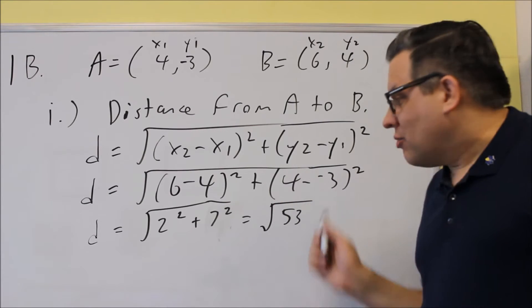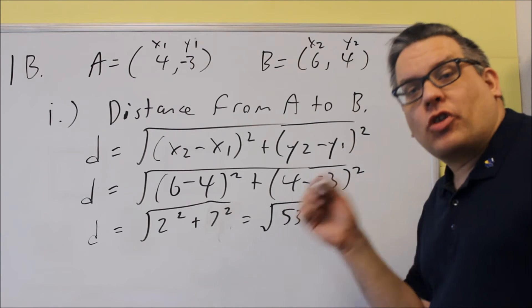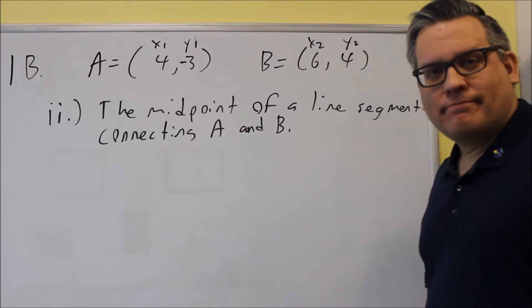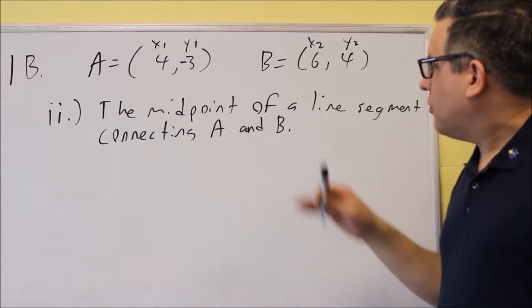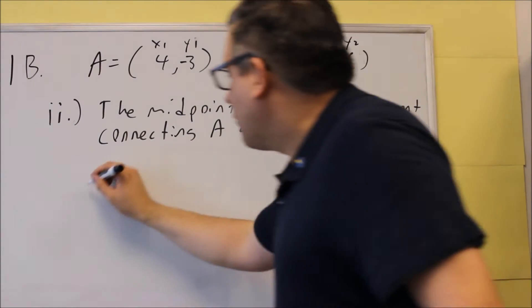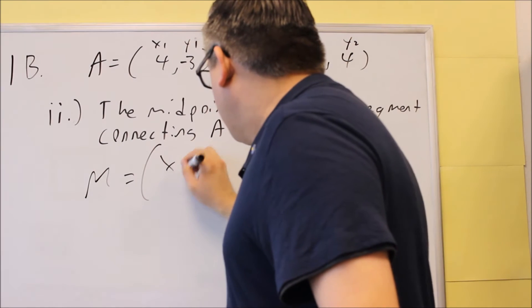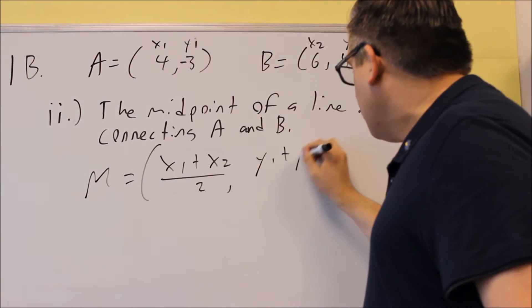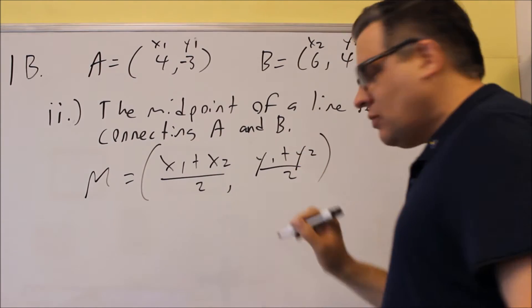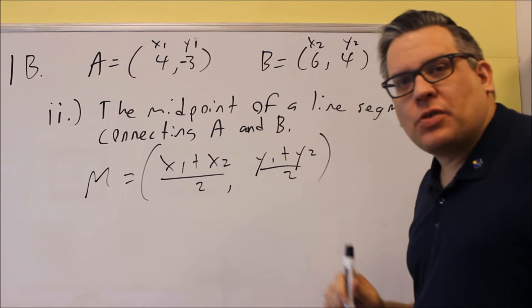If you do have a square root as your answer, you do want to leave it in a square root form. You don't need to take it into a decimal. Okay, for part double i, we have the midpoint of the line segment. So again, you need the midpoint formula for this one. We're taking the average of the x's and average of the y's. We need both these pieces for the formula.